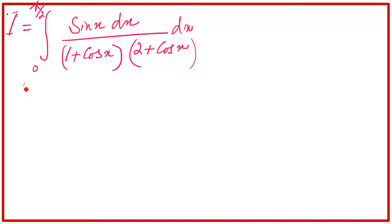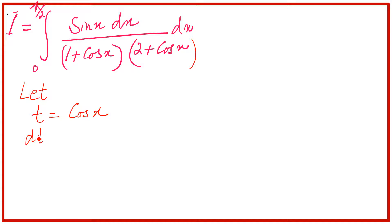So, what do we do first? We will use the substitution method. We let t equal to cos x. So, dt is equal to minus sin x dx. Here we have sin x dx, but from the derivative we have minus sin x dx.